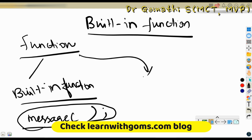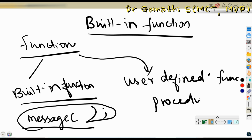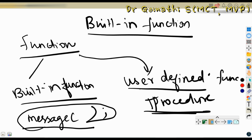We have another type of function called user-defined functions, which we usually create using a procedure — typically using the t-procedure snippet. So these are the two types of functions we have in Business Central.